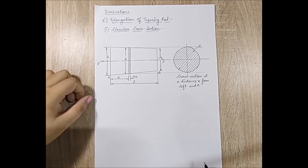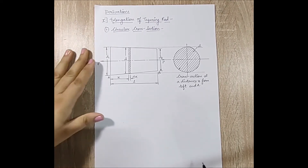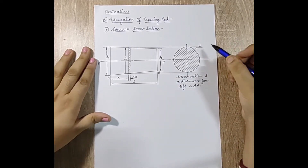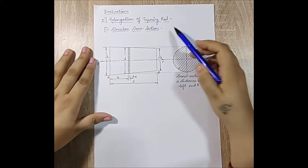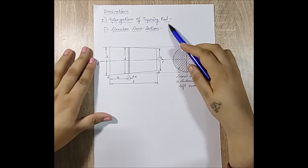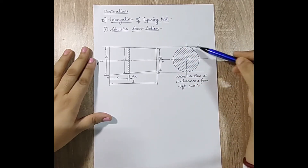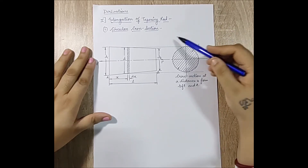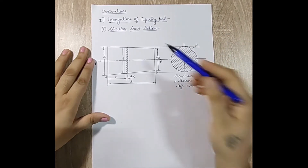Hello everyone, welcome to the next session of Strength of Materials. In this session I am going to discuss a derivation of elongation of a tapering rod. There are two derivations under this heading: one is for a circular cross section, and in the next lecture I will discuss a rectangular cross section.